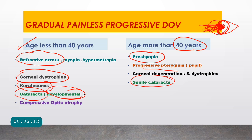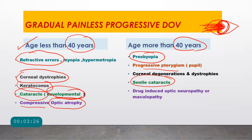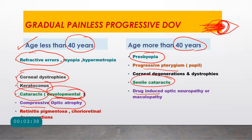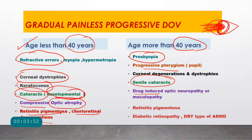Coming to the retina and optic nerve: optic atrophy is painless. In patients less than 40 years, the type seen is compressive optic atrophy. In age more than 40 years, we see drug-induced optic neuropathy. In the retina, retinitis pigmentosa is associated with black bone-spicule pigmentation and night blindness. Various chorioretinal degenerations and dystrophies are also seen in ages less than 40 years.